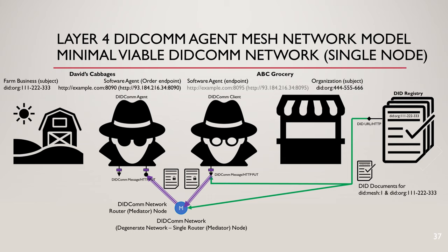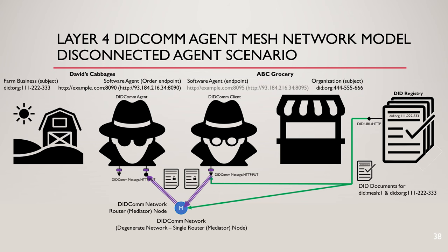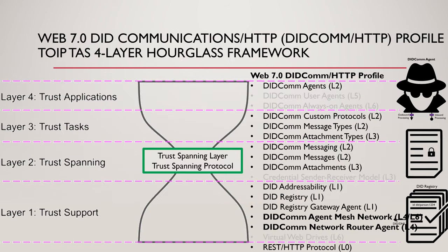For the TOIPE Hourglass framework, layer four adds the DIDCOM agent mesh network and the DIDCOM network router agent. These are network services, just like the DID registry and DID registry gateway agent, all enabled by DIDCOM. The router agents are all DIDCOM agents and belong in layer one trust support of the TOIPE TAS Hourglass framework.